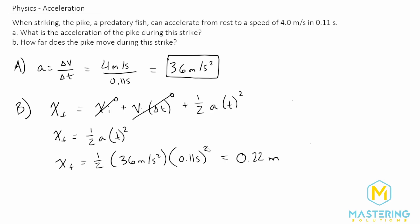So when you square the seconds, you have seconds squared. So we have meters per second squared times seconds squared. So the seconds will cancel, leaving us with meters.